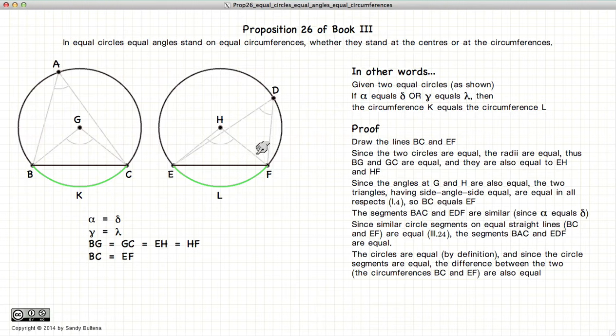since we're taking something that is equal, and subtracting something else that is also equal, the equality still holds, and we have that BKC is equal to ELF, because we've subtracted equals from equals.